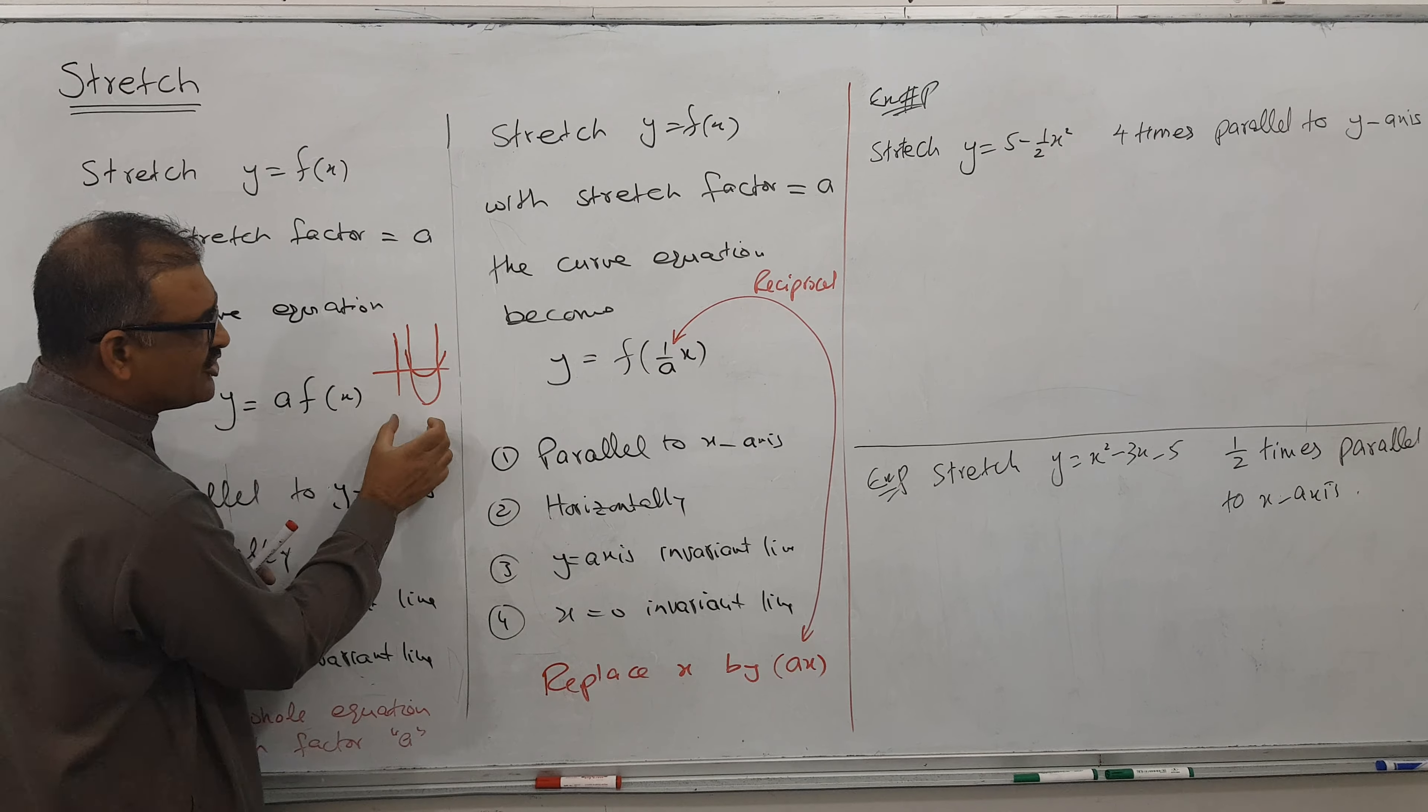What is the plan? What is the factor given here? I have to take the factor, reciprocate it, like flip it and replace x with that number. Then what I will do? I will replace